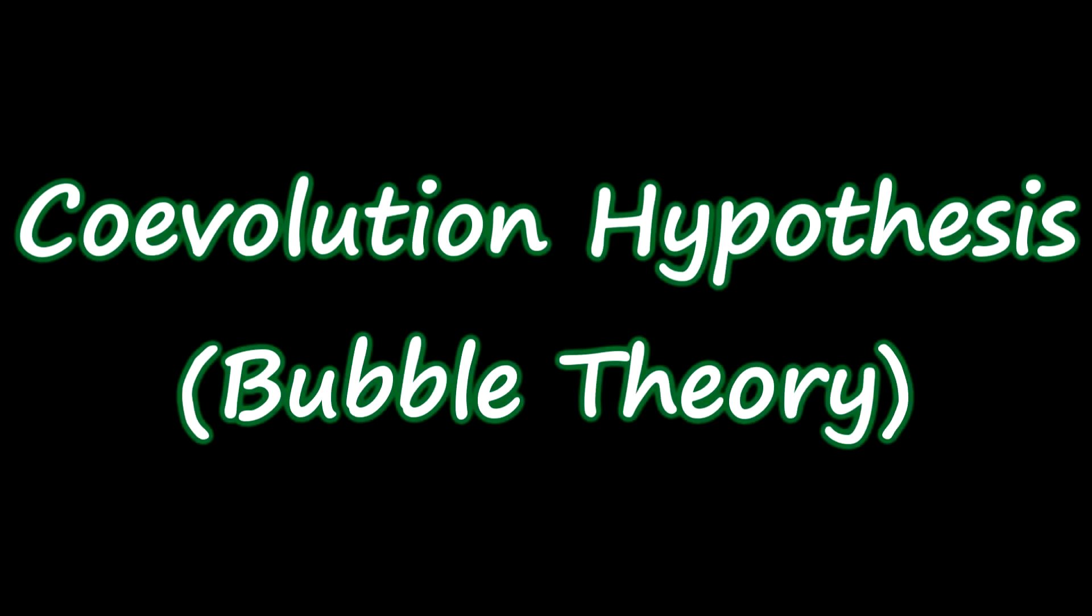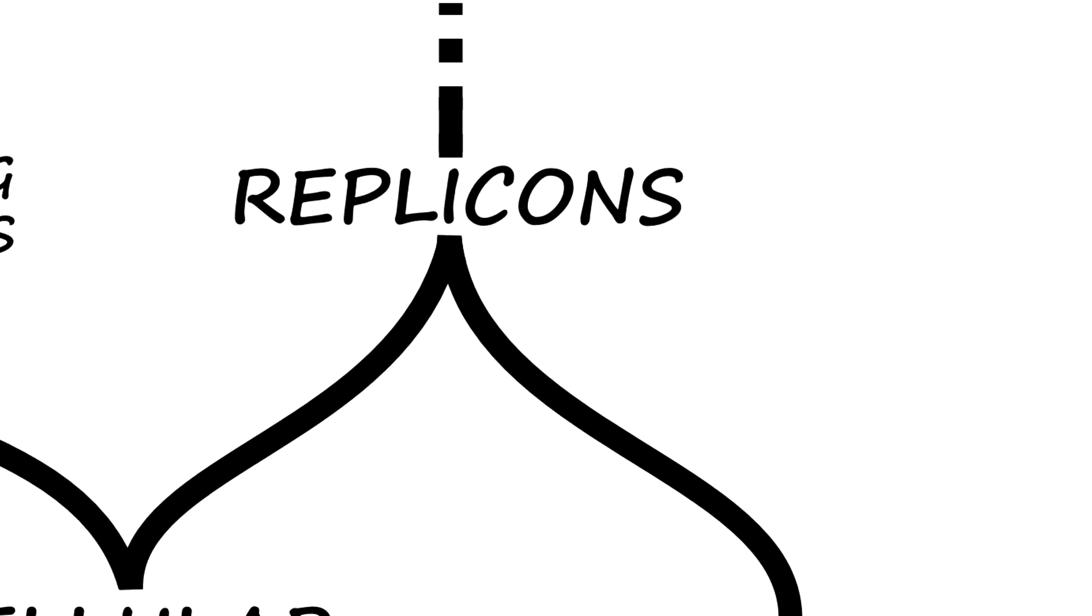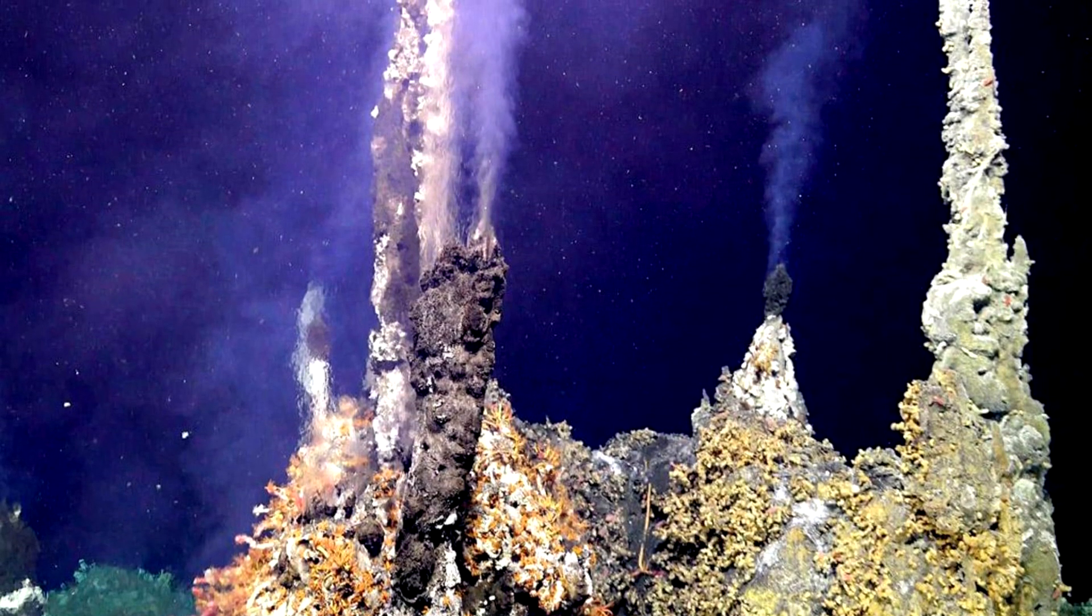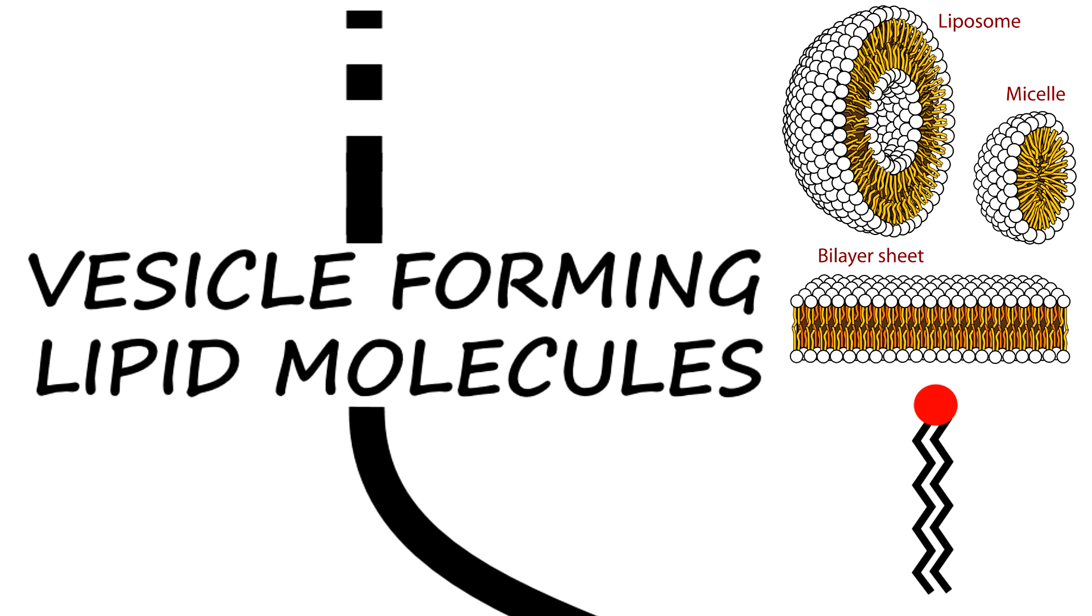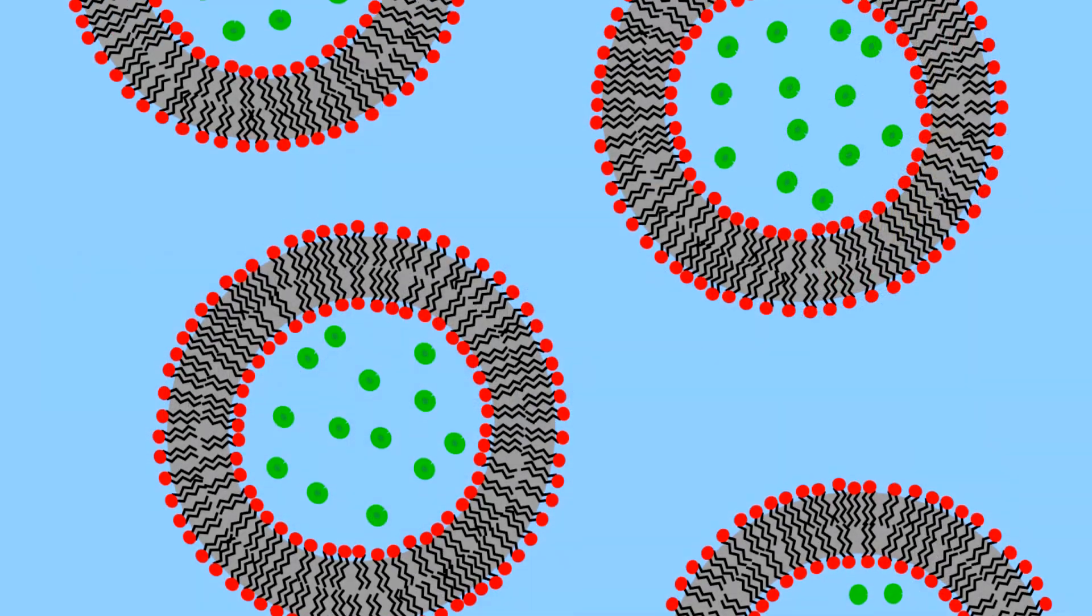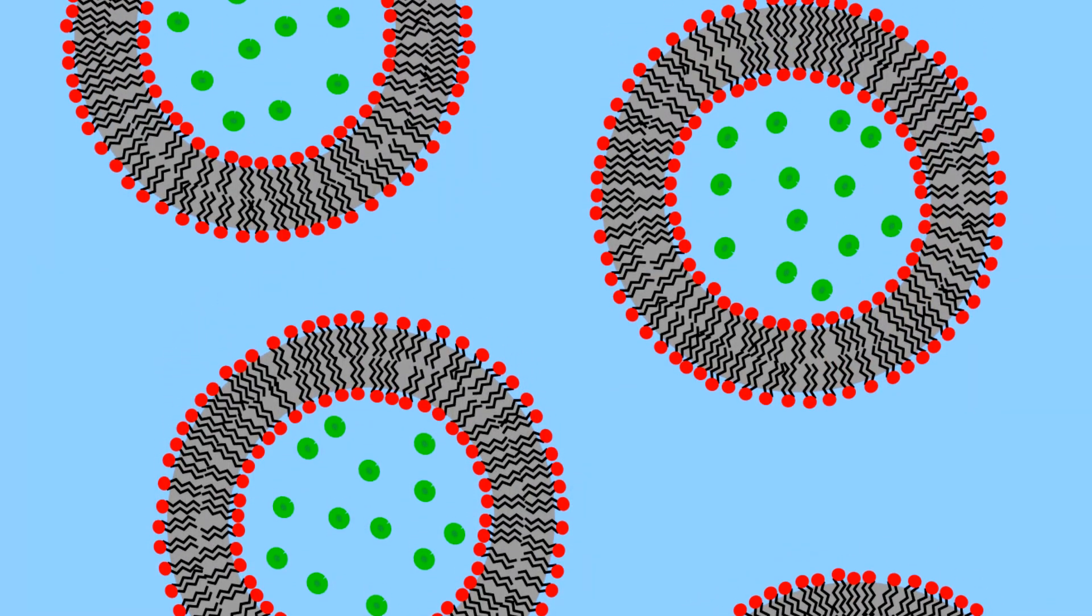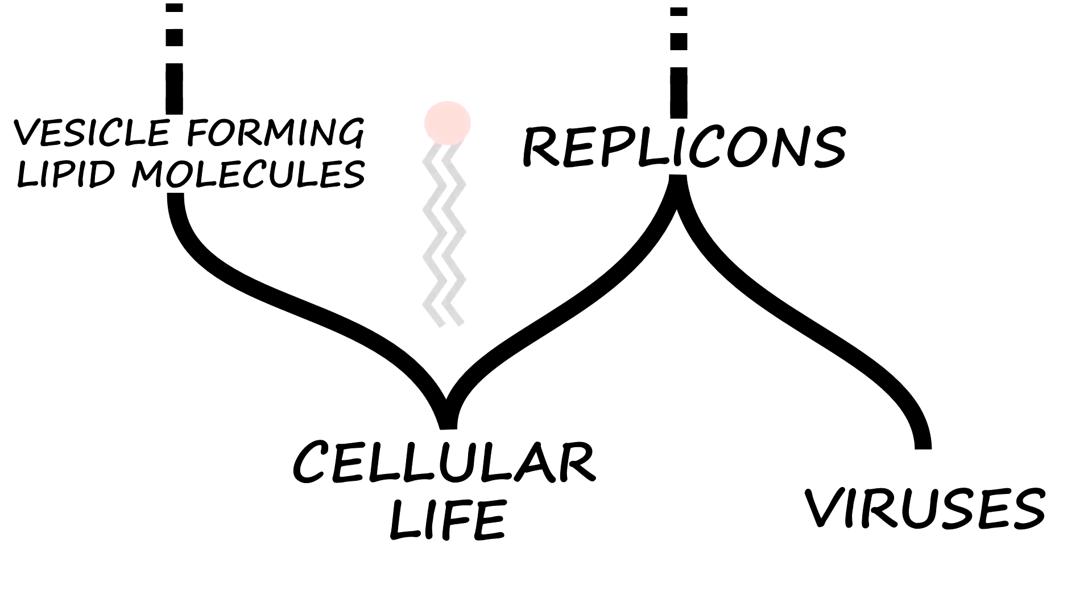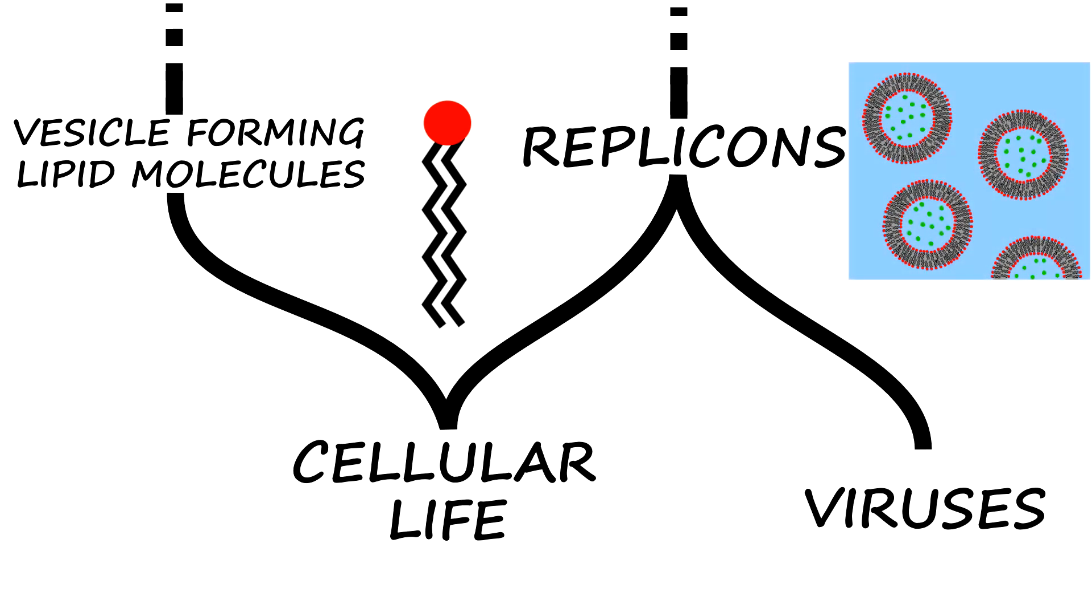This one is called the coevolution hypothesis, also known as the bubble theory. At the beginning, there was a community of early replicons, which are pieces of genetic info capable of self-replication. The food sources which were present in this early environment also released lipid-like molecules which could assemble into vesicles. The replicons near the food source could be enclosed by these vesicles. But the replicons further away did not come in contact with these lipid-like molecules, but only came in contact with the already formed vesicles.